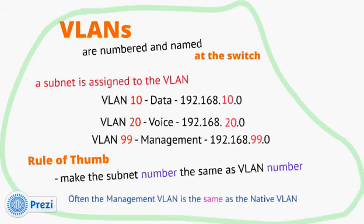Rule of thumb: make the subnet number the same as the VLAN number. So VLAN 10 uses subnet 10, VLAN 20 uses subnet 20 — it just makes things a lot easier down the road. Often the management VLAN is set the same as the native VLAN, but that's not a good idea.